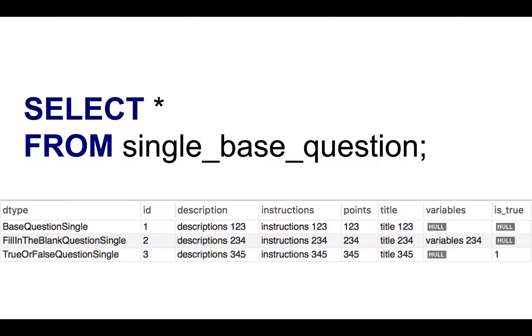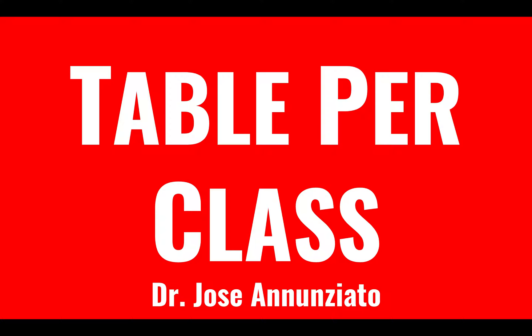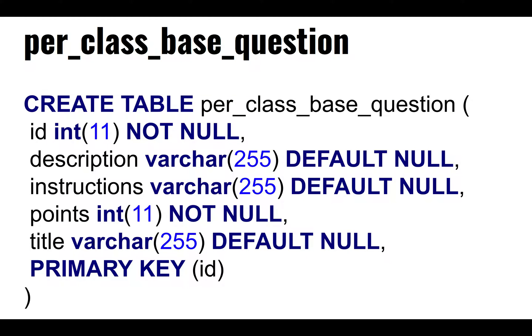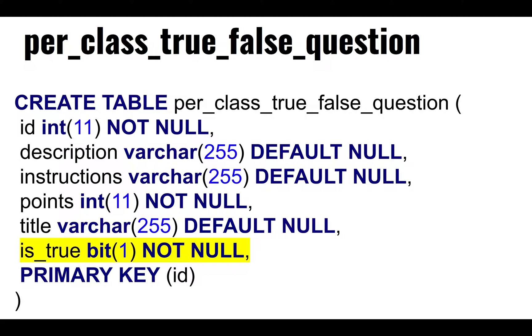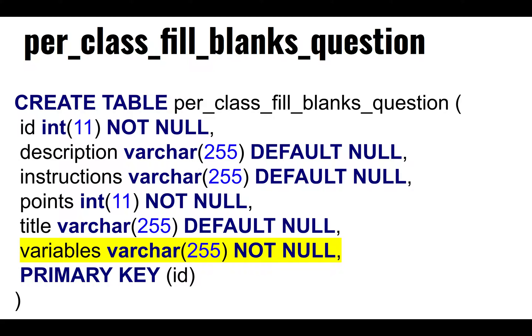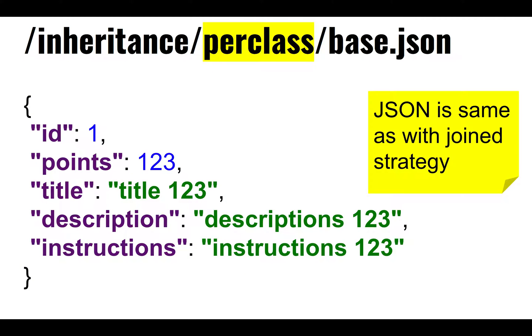The table per class strategy is the hybrid solution — the best of both worlds. You split into multiple tables, which makes more sense conceptually, but you don't have to join. The base class exists, and then the subclasses — true-false and fill-in-the-blanks — not only have their own fields but also all the fields from the parent: description, instructions, points, and title. The values all live at the leaves of the hierarchy, so there's no need to walk the inheritance tree.